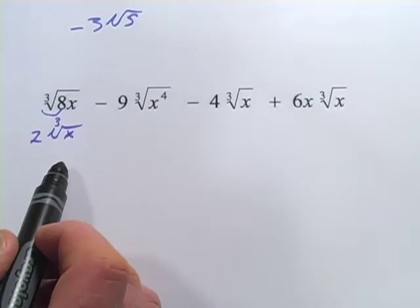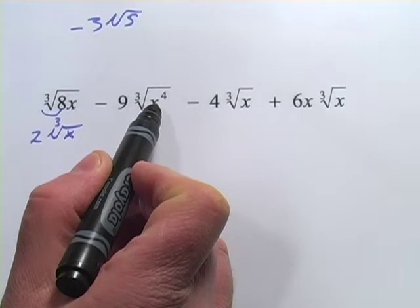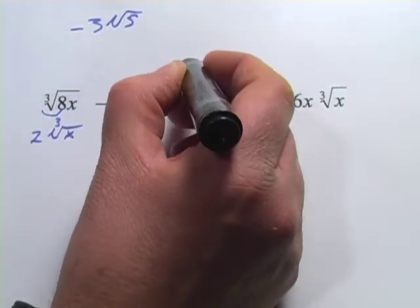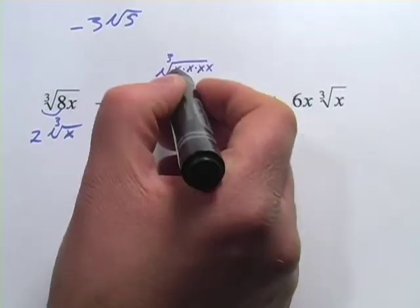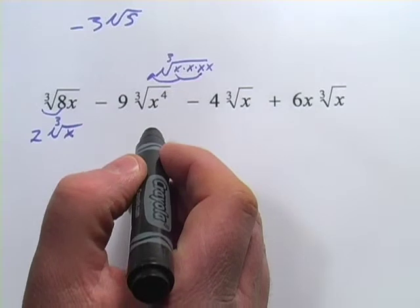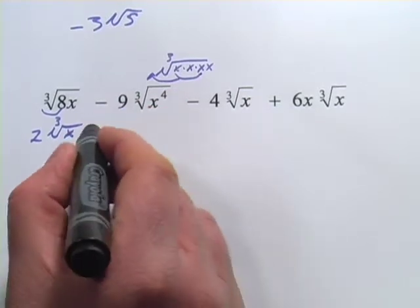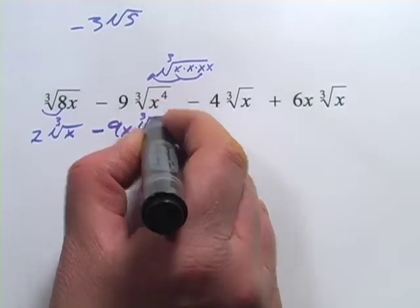Now we have 9 times the cube root of x to the 4th. And x to the 4th is x times x times x times x. With a cube root, we're looking at pulling out chunks of 3. So I can pull out 1 and leave 1 behind. So one of the x's comes out here. I get 9 times x times the cube root of x.